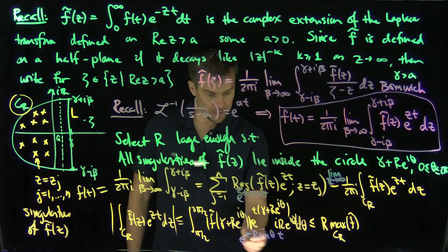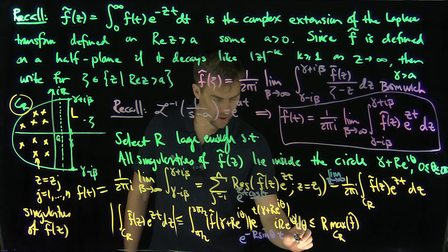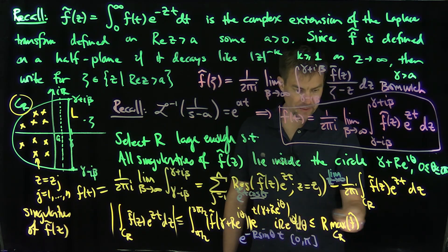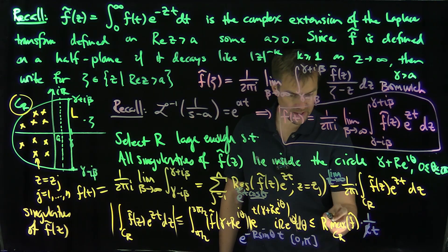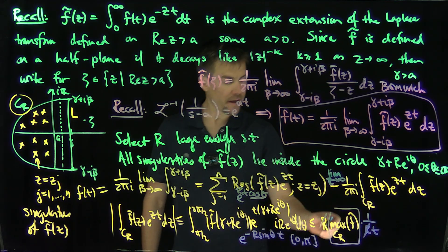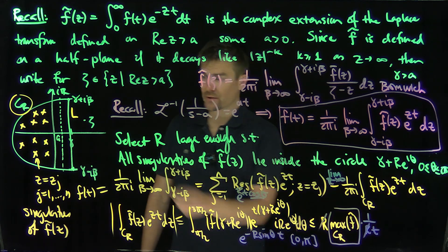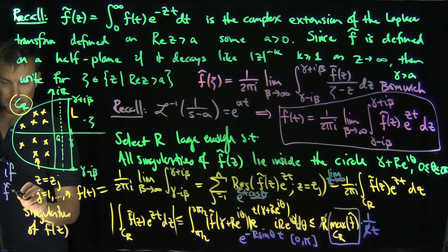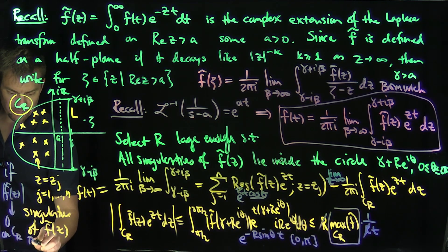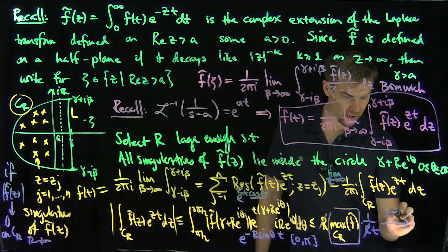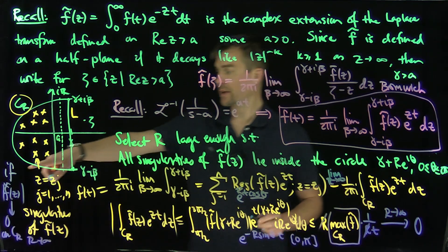By Jordan's inequality that exponential term contributes a factor of 1 over (R t), so the R factors cancel, and we're left with just the maximum of f-tilde on C_R. This means that if the maximum of f-tilde on C_R goes to zero as R goes to infinity — which happens under reasonable decay assumptions — then this integral goes to zero. Laplace transforms always have this decay property: functions like 1 over (s minus a), 1 over (s² + 1), s over (s² + 1), all decay to zero as R goes to infinity.